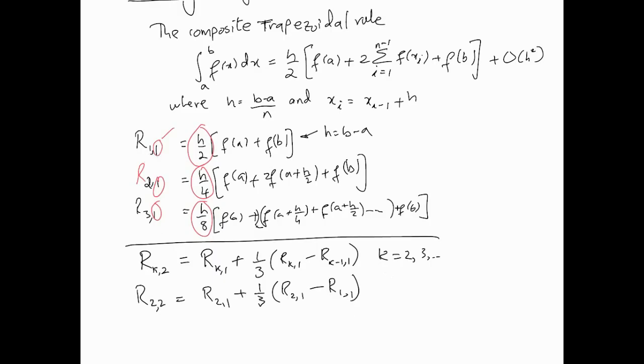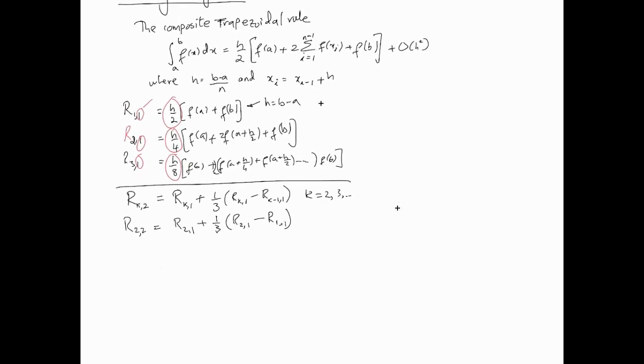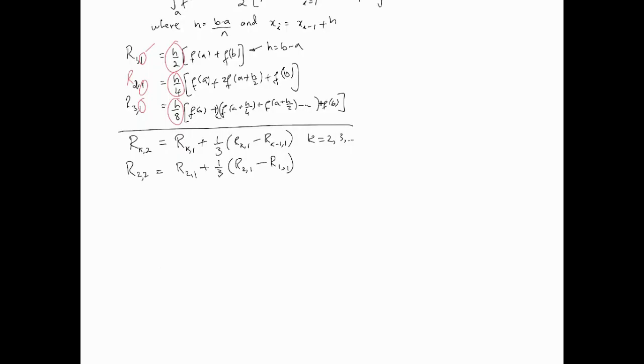So anyway, this is basically gives us the second round, and in this way we can continue on to produce some iterations, some improved iterations. So then you can have in the same way R_{32},